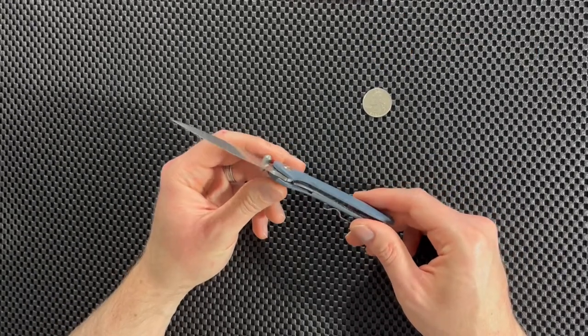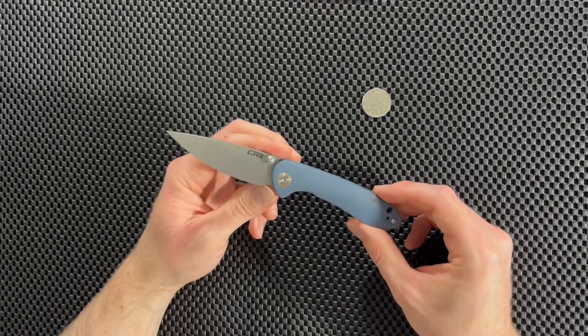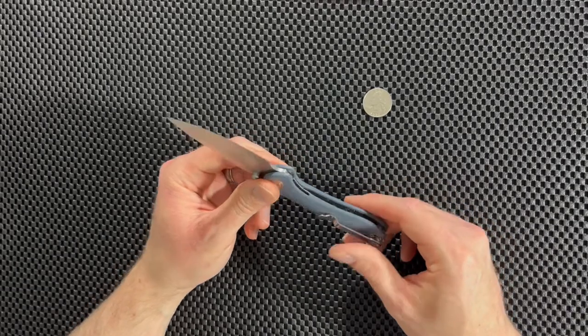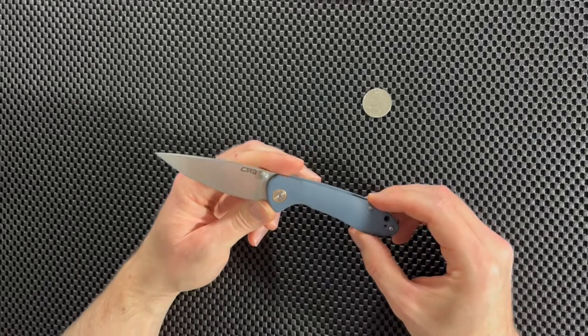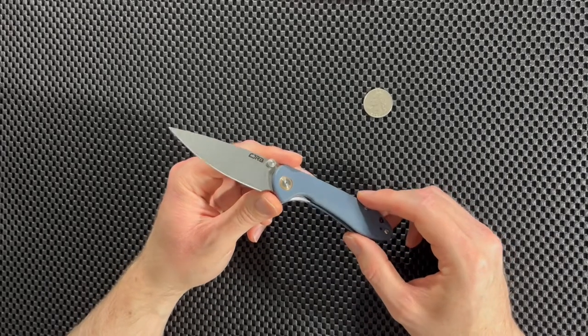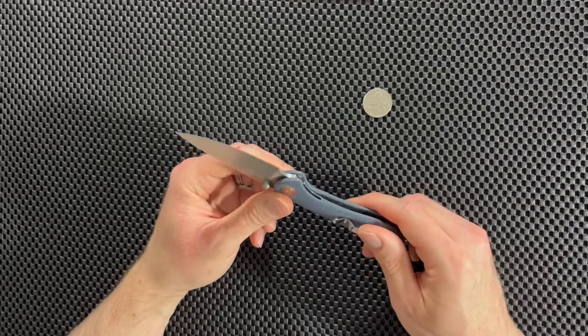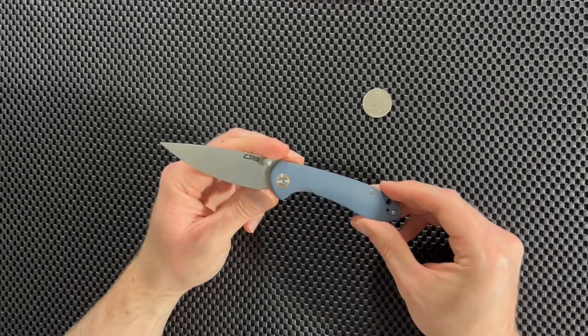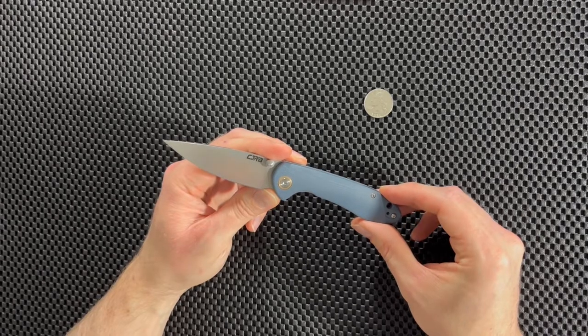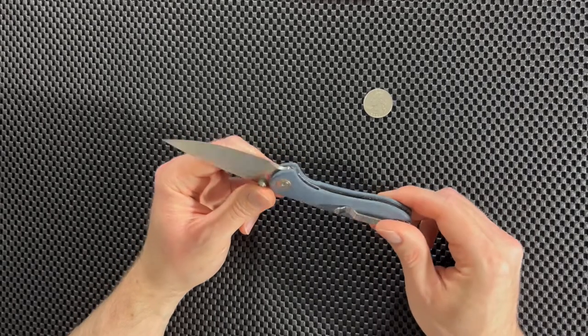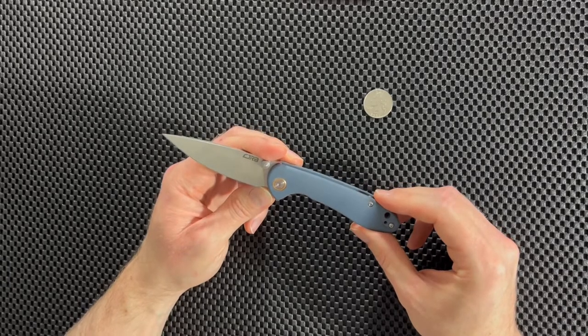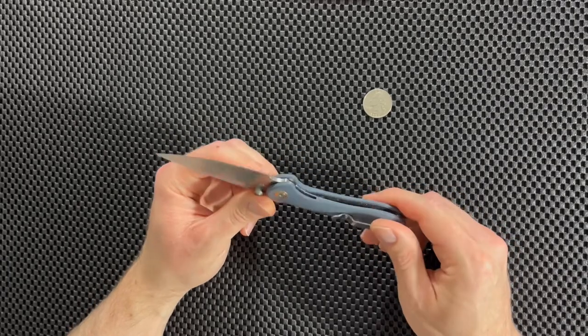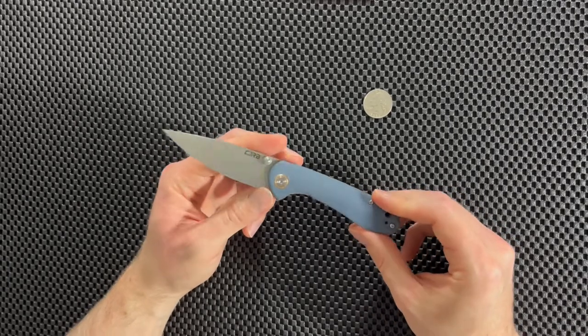Next, let's talk about the handle. Now the scales that come on this knife are made from G10, which is always a good choice in my opinion. I love G10 scales on these kind of everyday carry knives. These ones, you can see they come in this kind of light gray, light blue color, which I think looks really cool, and it's unique. I haven't seen a lot of knives that have this color of scales. In fact, this is the only one I've seen with this color.